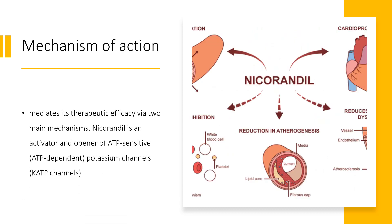Mechanism of Action: Nicorandil mediates its therapeutic efficacy via two main mechanisms. Nicorandil is an activator and opener of ATP-sensitive, ADP-dependent potassium channels — KATP channels — composed of KIR6-type subunits and sulfonylurea receptor subunits. Nicorandil binding sites are located in the sulfonylurea receptor-2 (SUR2) in the ADP-sensitive potassium channel, which are regulatory subunits that exhibit ATPase activity. There are two types of SUR2 subunits — 2A and 2B — with SUR2A more predominantly expressed in skeletal and cardiac myocytes, and SUR2B in smooth muscle cells. Nicorandil more potently activates SUR2B/KIR6 than SUR2A/KIR6 channels to cause hyperpolarization.